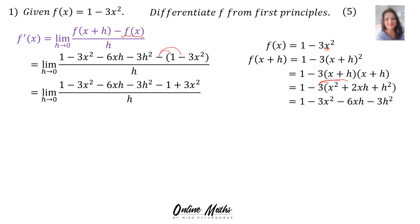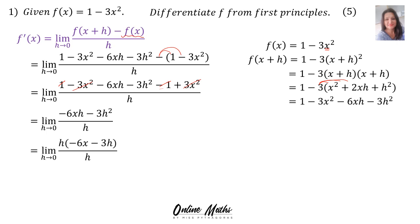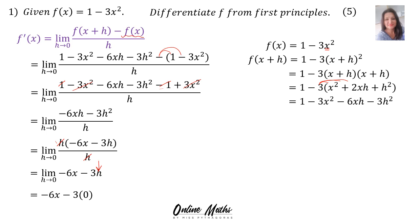The next step: I will multiply in the minus, so this part becomes minus 1 plus 3x squared. Now you can add like terms: 1 minus 1 is nothing, and minus 3x squared plus 3x squared is nothing. You're left with the limit h tends to 0 of minus 6xh minus 3h squared over h. In the next step, take out h as a common factor — h and h cancel — and you're left with the limit h tends to 0 of minus 6x minus 3h. Substitute h equals 0, and therefore the derivative is minus 6x.